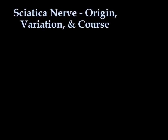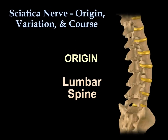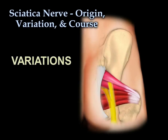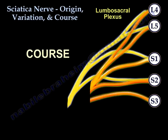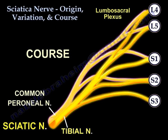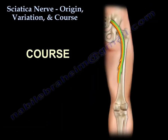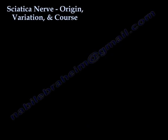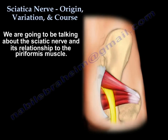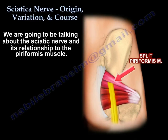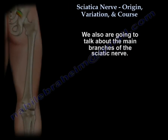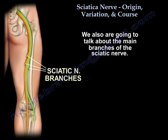We're going to be talking about the sciatic nerve — its origin, its variation, and its course. We're also going to be talking about the relationship of the sciatic nerve to the piriformis muscle, and the main branches of the nerve.